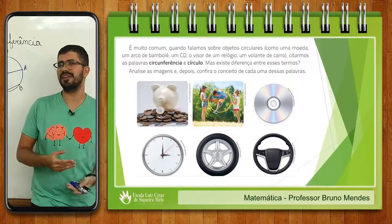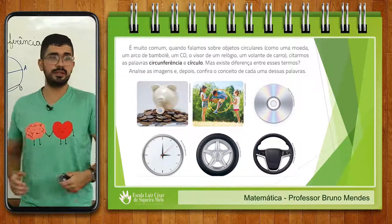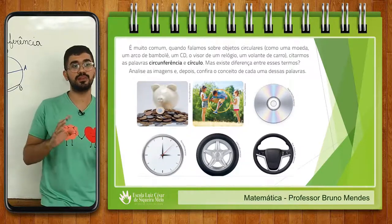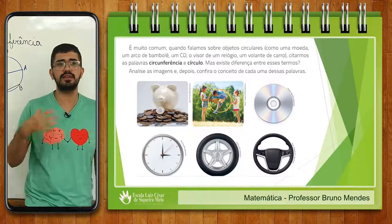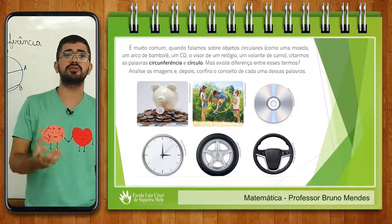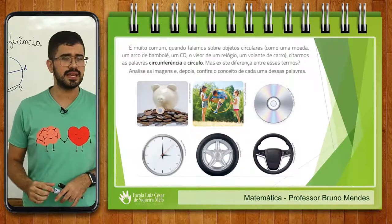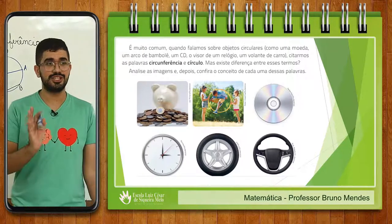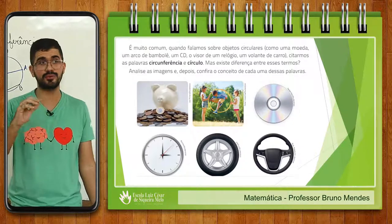É muito comum, como eu havia falado anteriormente, quando falamos em objetos circulares — por exemplo, uma moeda, um arco de bambolê, um CD, o visor de um relógio, um volante de um carro — nós utilizamos algumas palavrinhas como circunferência e círculo. Então vejam aí nas imagens tudo que o tio acabou de mencionar. Esses objetos circulares nos dão ideia do que seriam círculos e circunferência.